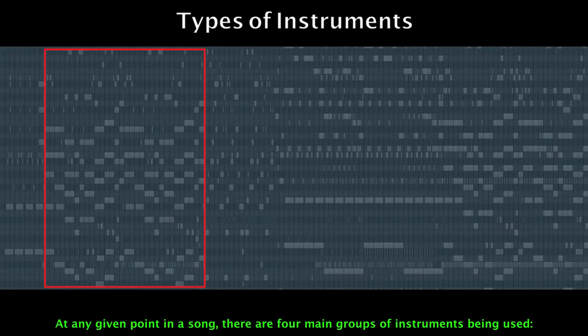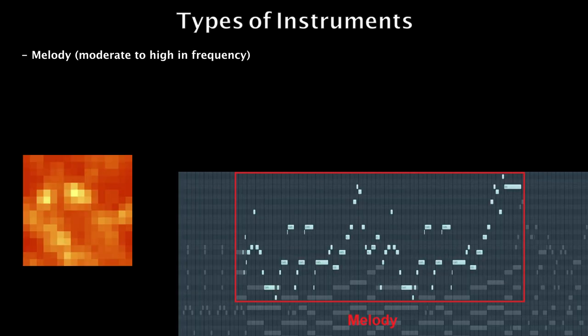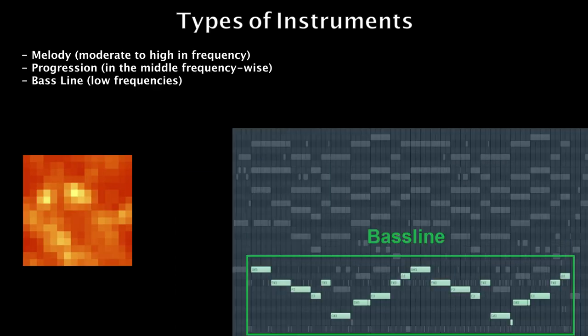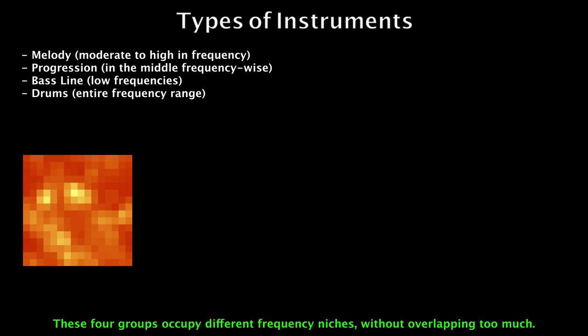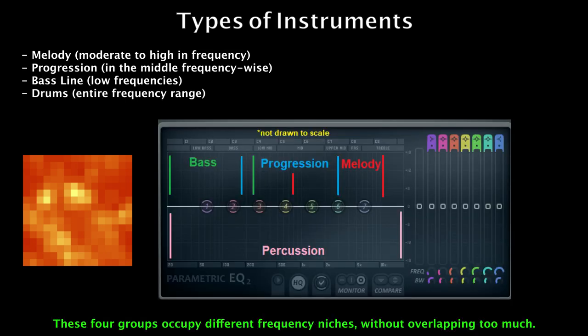At any given point in a song, there are four main groups of instruments being used: melody, progression, bassline, and drums. These four groups occupy different frequency niches without overlapping too much.